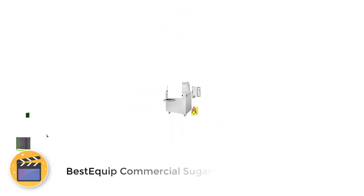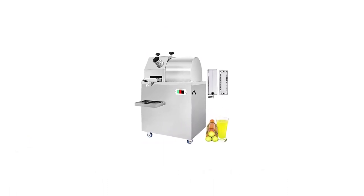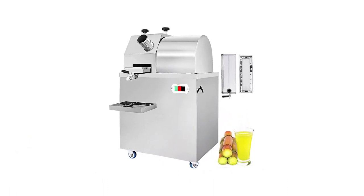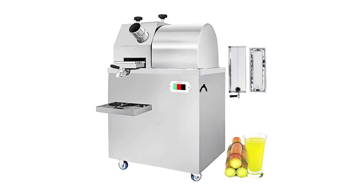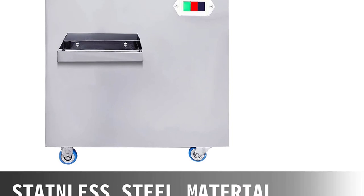Number 4. Best Equipped Commercial Sugarcane Press Juicer. Sugarcane press, also called sugarcane juicer, is the new generation of healthy and environmental protection kitchen equipment. It can be used to extract juice from various kinds of fresh fruits, vegetables, grasses and grains.